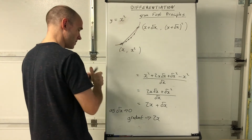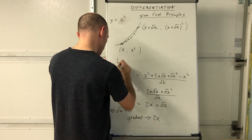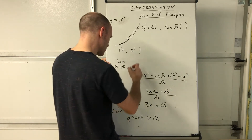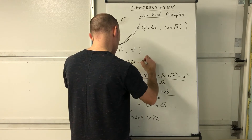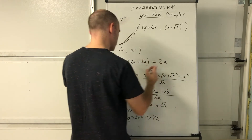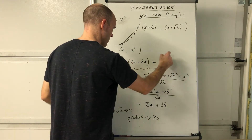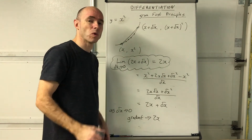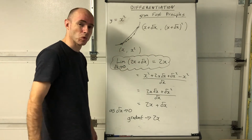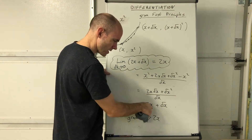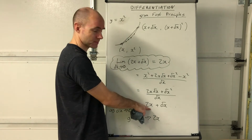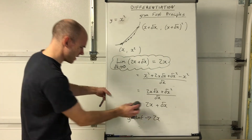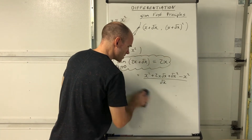We write it more formally using limits: the limit as delta x tends towards 0 of (2x + delta x) is equal to 2x. That's a better way of writing it because it's a limiting value - what is this expression getting closer and closer towards? The 2x part is not dependent on delta x, but delta x itself tends to zero, so we get 2x.